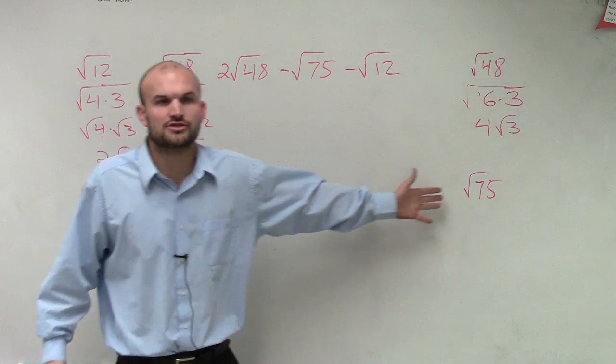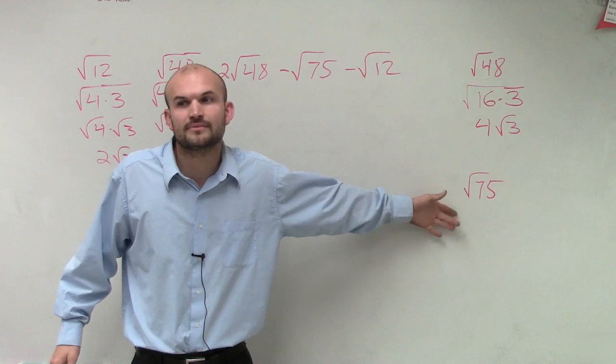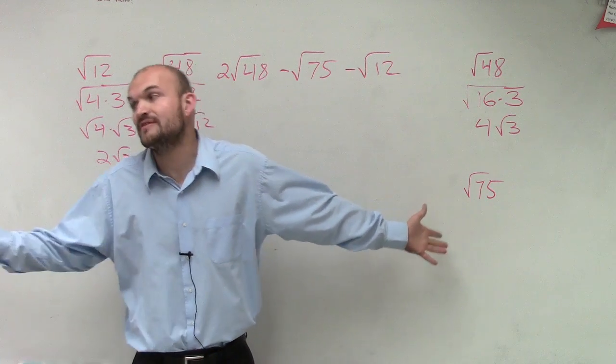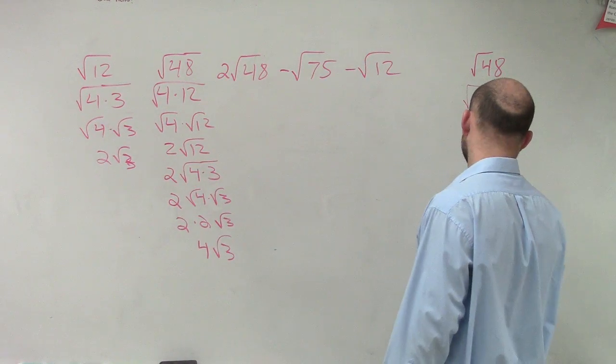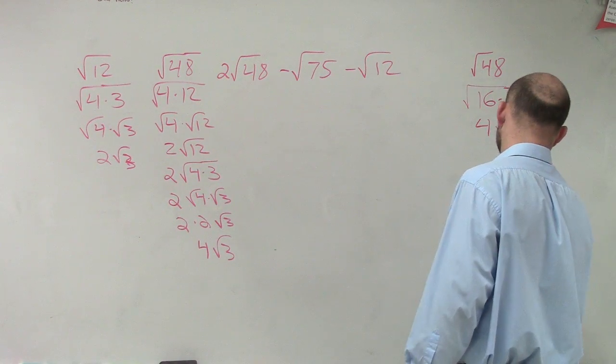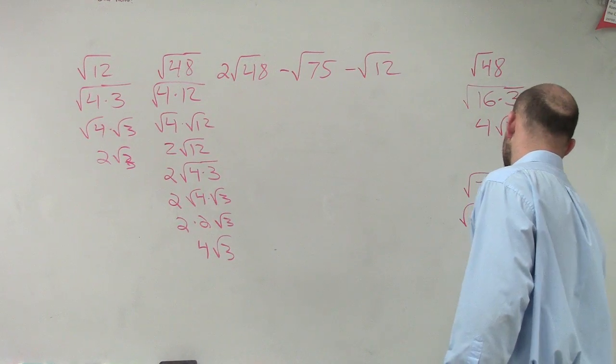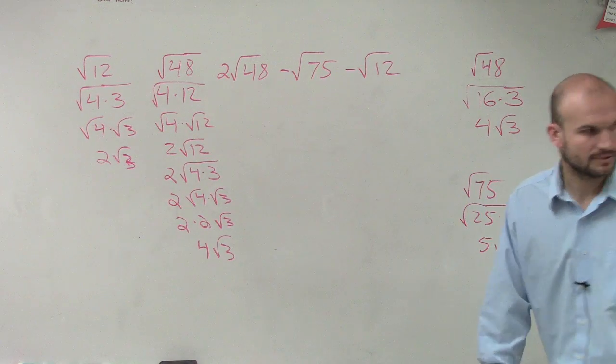Then let's do 75. What's the largest square number that goes into 75? 15? 25. 25, right? Because 15 is not a square number, but 25 is. Got it? Okay.